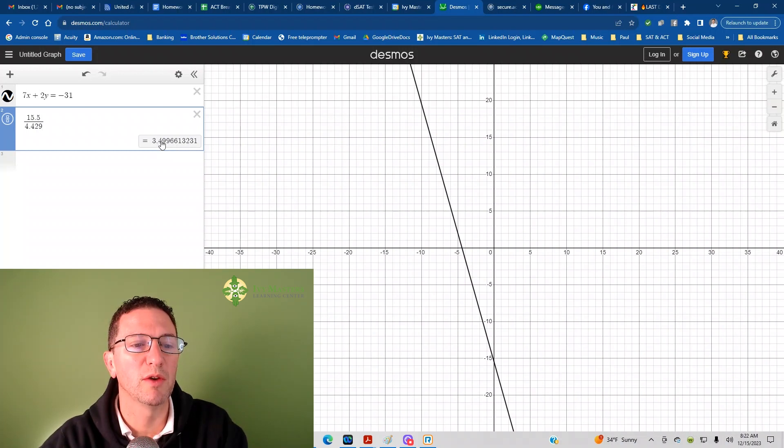Actually, if you bubbled in 3.499, which would take up every space, then you'd actually be marked wrong. Now, you are allowed to cut off the decimal, but the only reason it didn't give me 3.5 is because 4.429 is the approximation and not the exact. So what I'm going to do is I'm going to also show you a couple ways you can do it by hand.